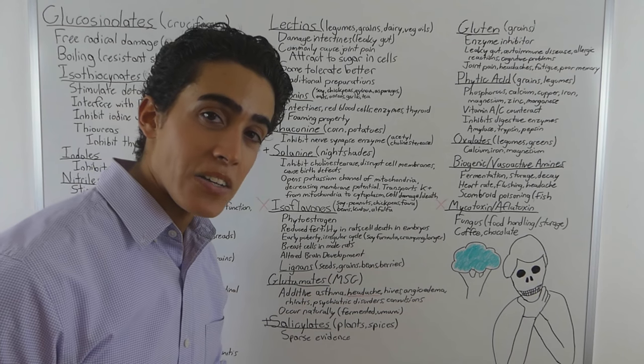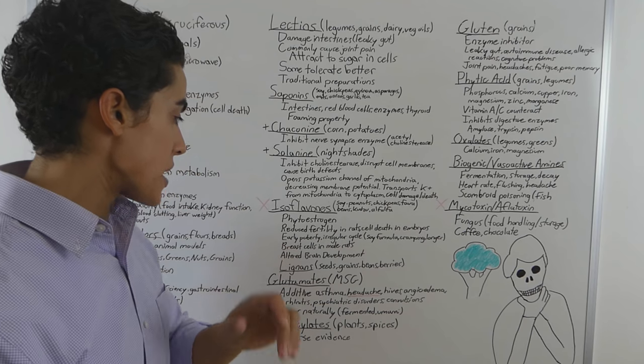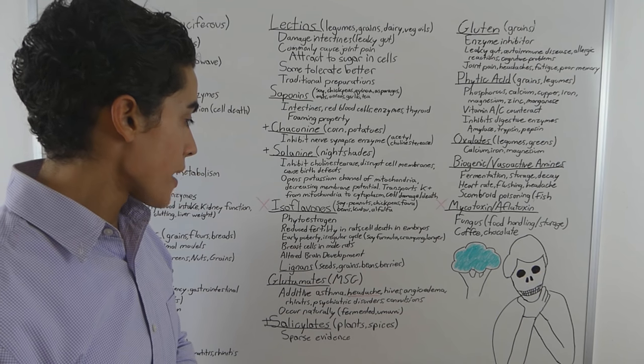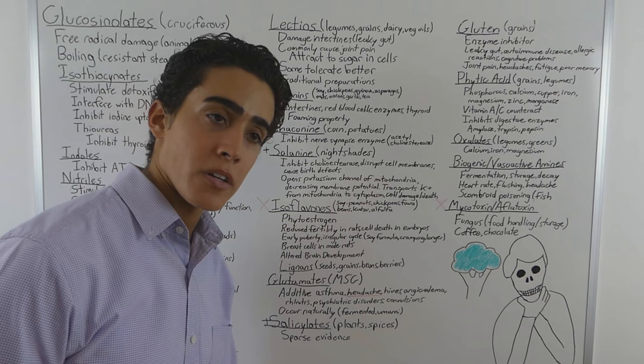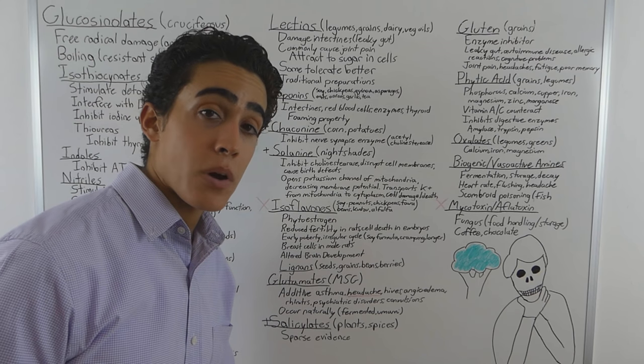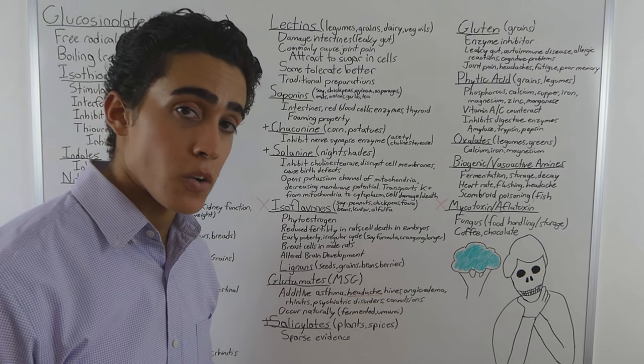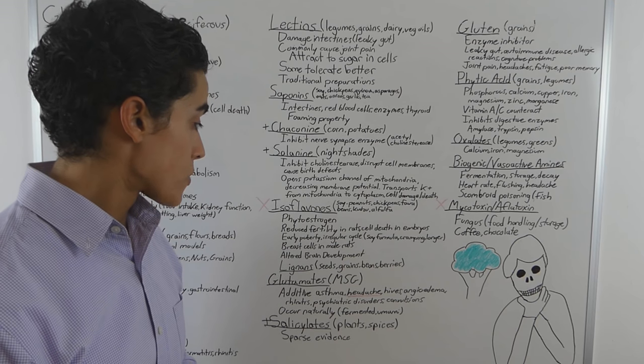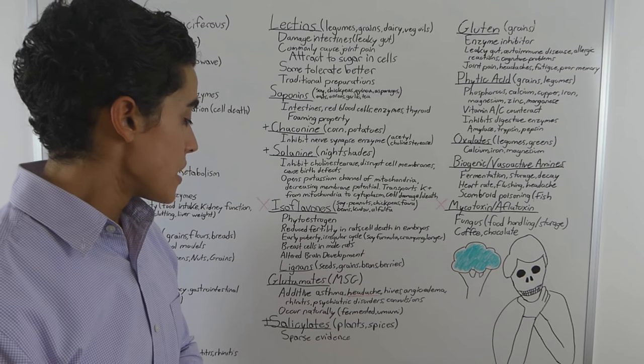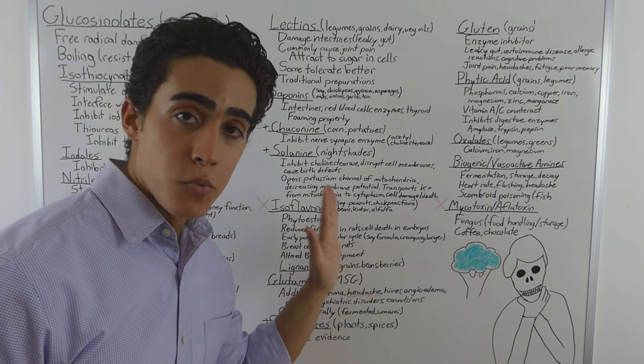Resulted in breast cells in male rats and altered brain development. I want to blame isoflavones and soy formula for a lot of the problems that I've personally had. I think it's something that's pretty much a poison. It alters our hormones, our system and everything. I don't really want to go too much into that, but it's definitely something we need to be avoiding.